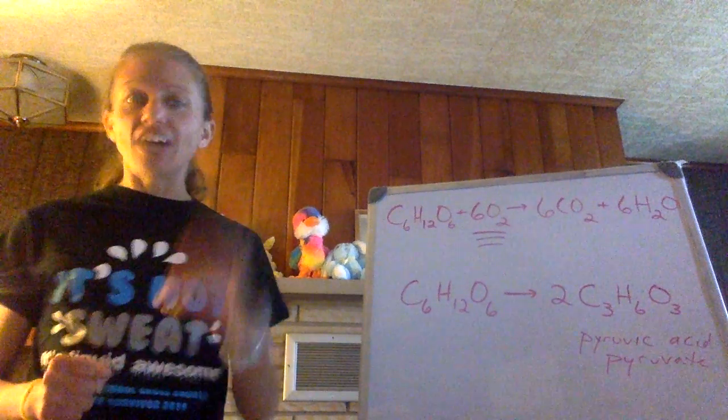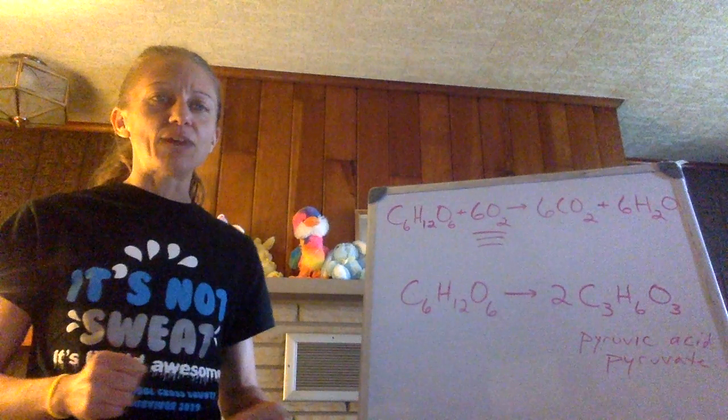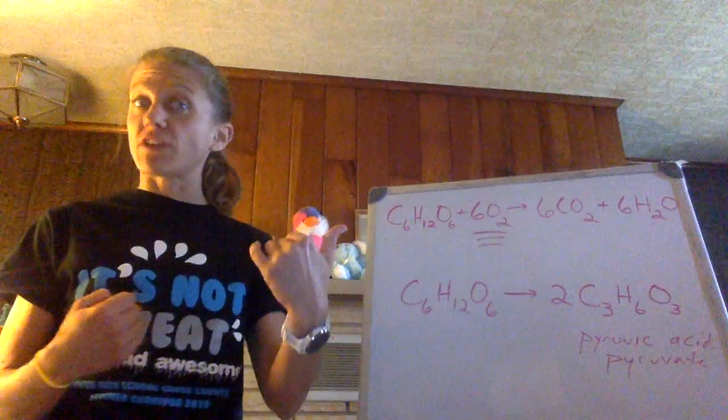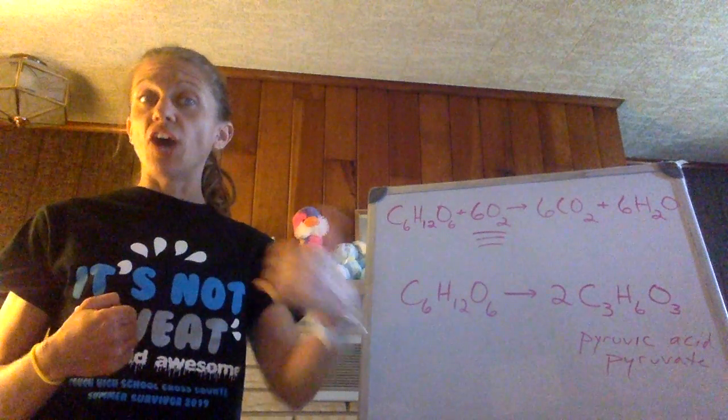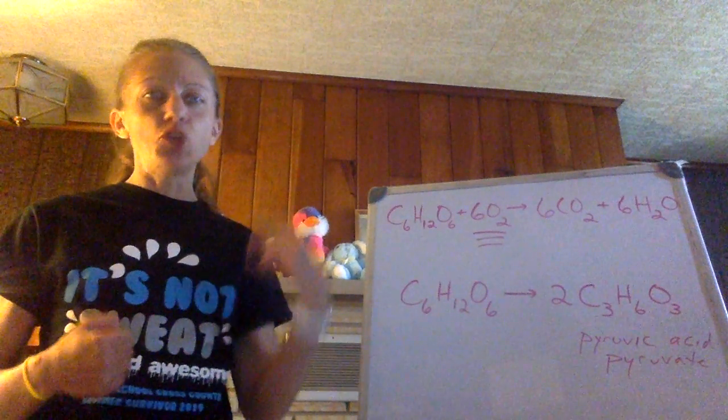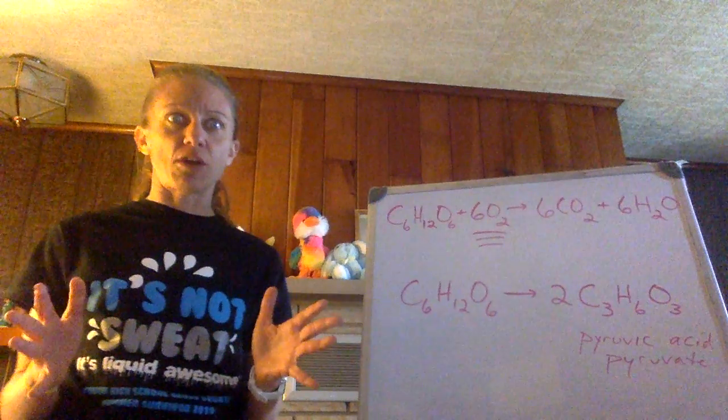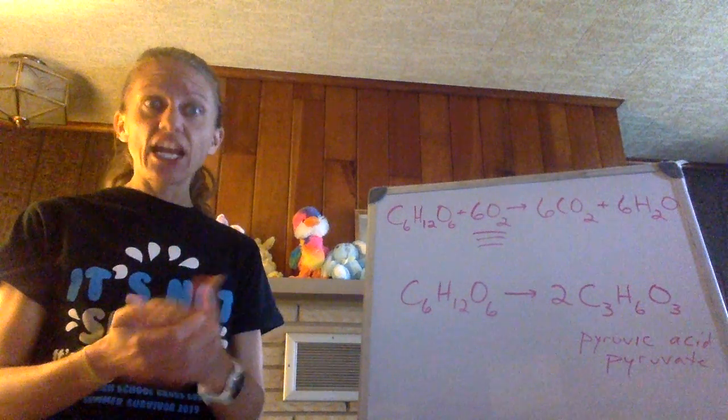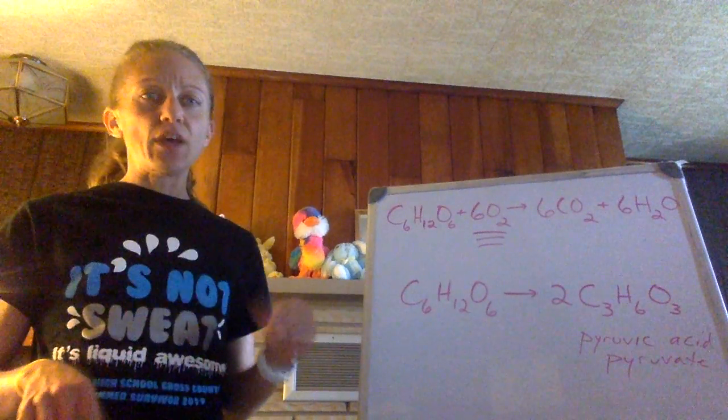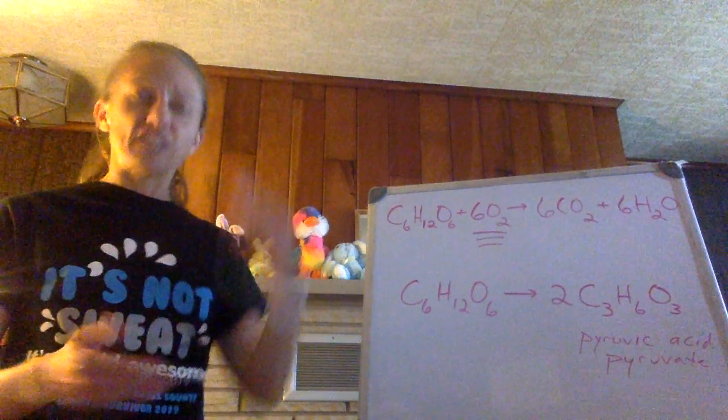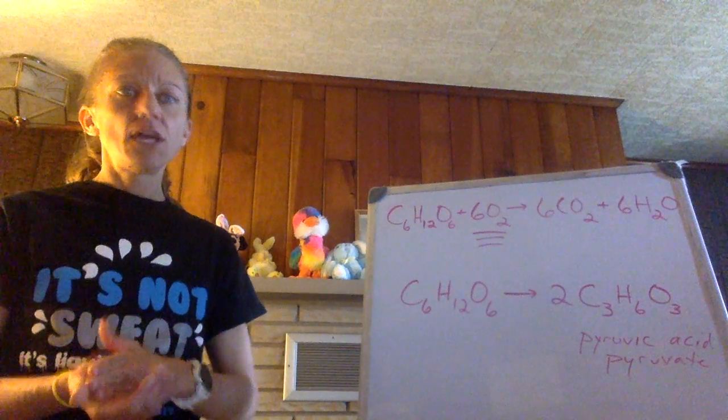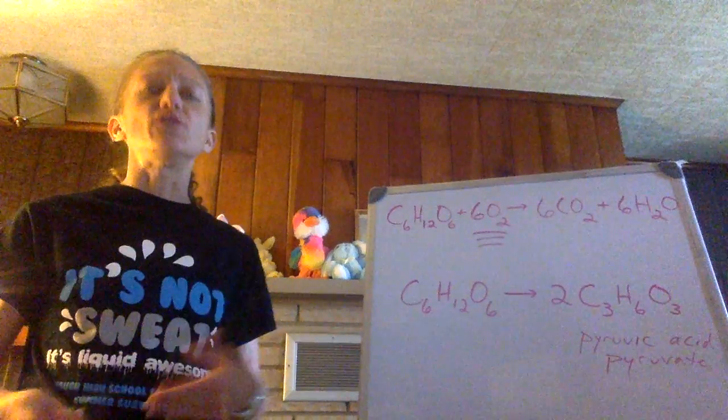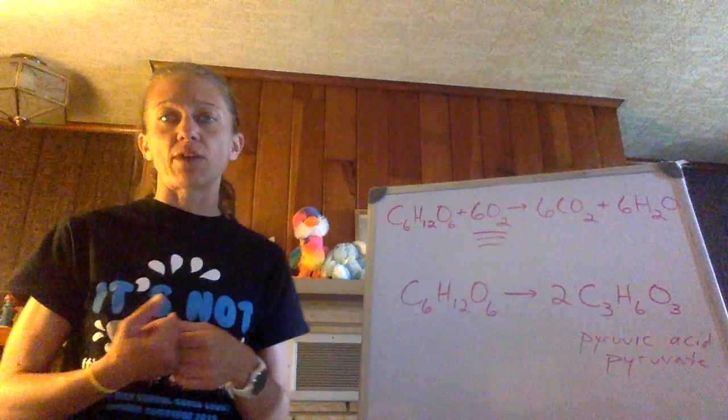Anaerobic respiration doesn't take the time, doesn't combine with oxygen, and for every glucose molecule that was giving you 34 or 36 ATP with aerobic respiration, it pops you out two ATP molecules with anaerobic respiration. It does it quick, it does it dirty, and it's done. But you've got your two ATP molecules that you desperately need right at that second. It's not your ideal yield, but it serves the purpose. You burn through glucose very quickly with anaerobic respiration.